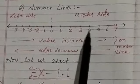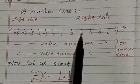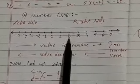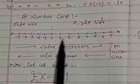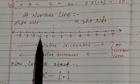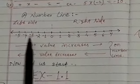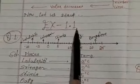But value decreases when we go from right to left on the number line. For example, 4 is greater than 3, 3 is greater than 2, 2 is greater than 1, minus 2 is less than minus 1, and minus 4 is less than minus 3. Now let us start Exercise 1.1.